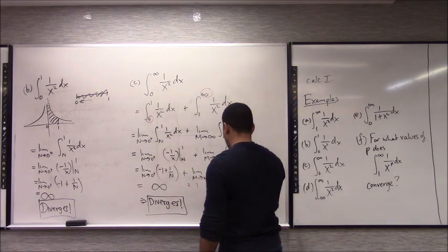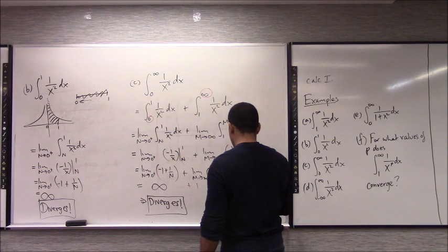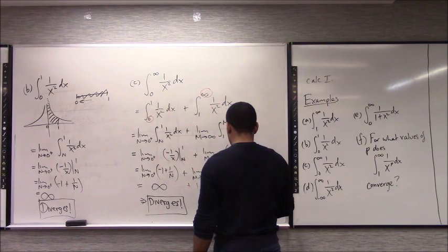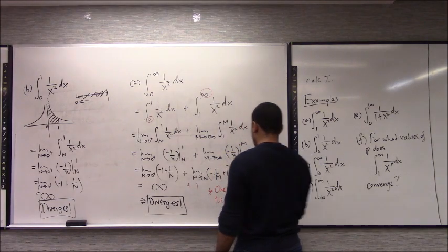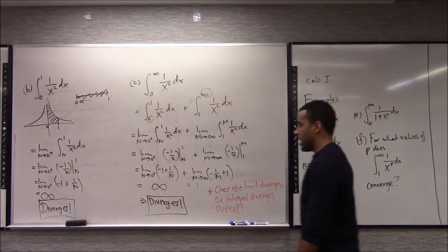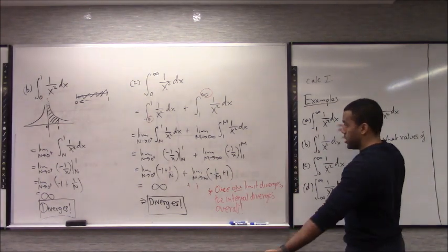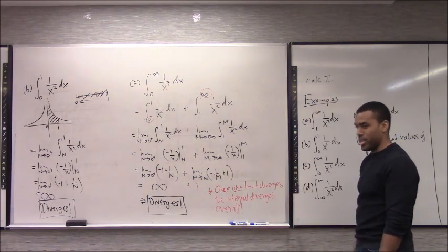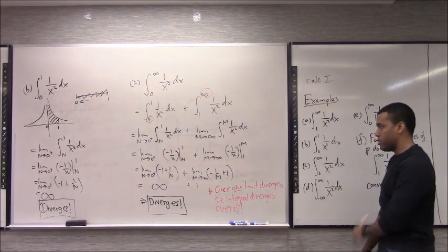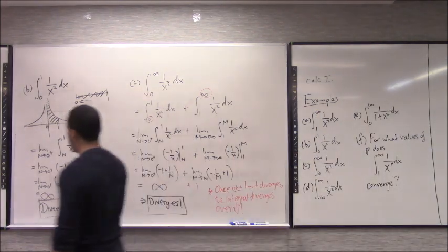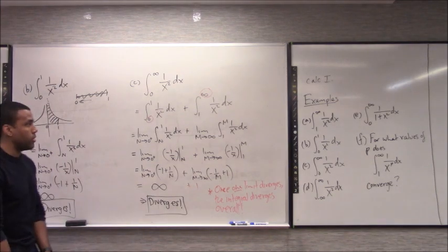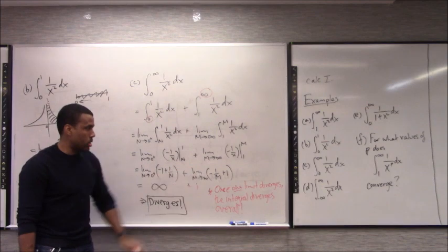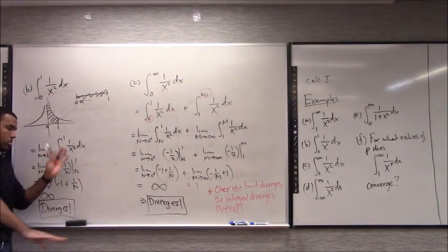That's a general principle: if you have several pieces and one of those limits messes up, the whole thing gets messed up. Once one limit diverges, the integral diverges overall. Once you've seen that one part goes to infinity, you don't even have to worry about what the other pieces are — it doesn't matter. Once one person gets messed up, the whole thing gets messed up. That can save you a lot of time.